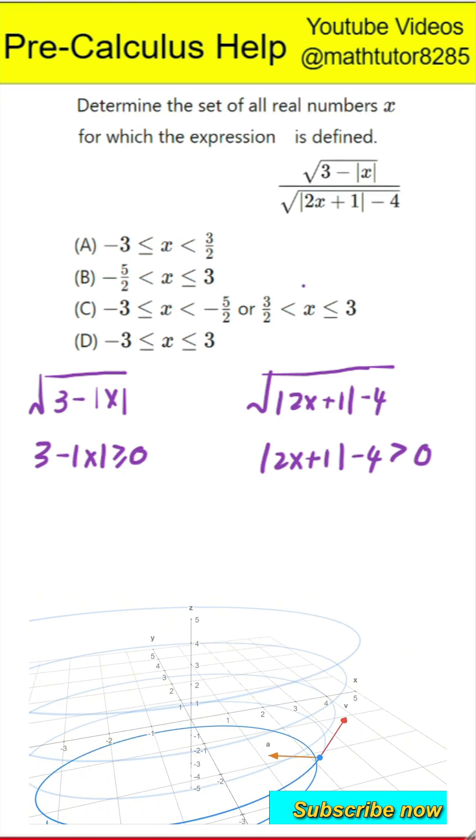Next step is to solve these two requirements separately. From the first condition, the absolute value of x less than or equal to 3 tells us that x must be between negative 3 and positive 3, including both.